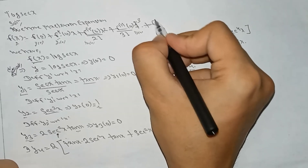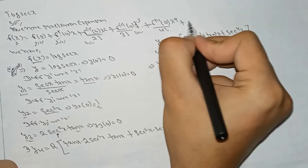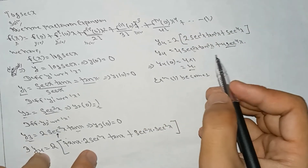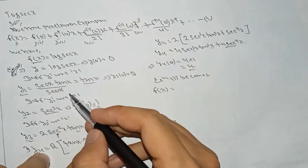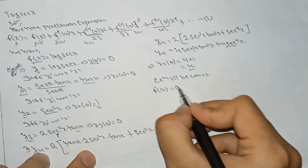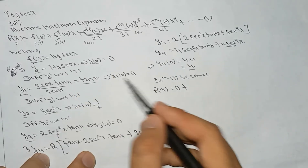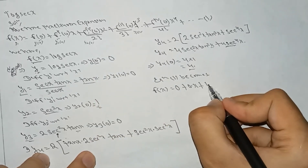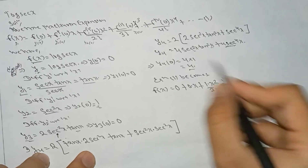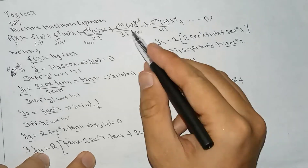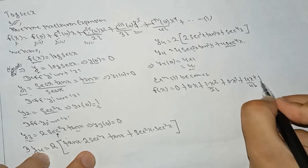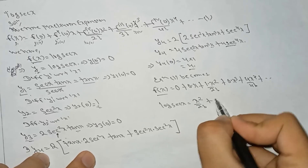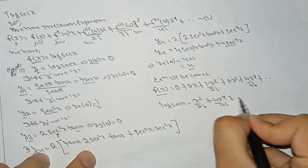Substituting all values into the Maclaurin formula: y(0) = 0, y1(0) = 0, y2(0) = 1, y3(0) = 0, y4(0) = 4. Therefore f(x) = log(sec x) = x²/2! + 4·x⁴/4! + ... This is the required expansion.